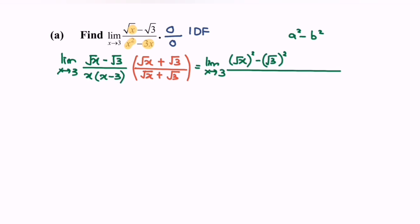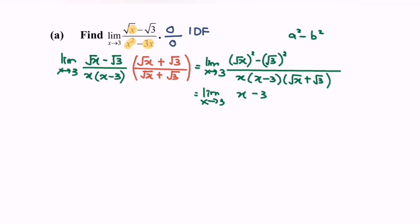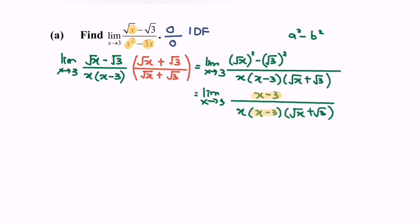Copy the denominator. Then simplify the situation. Limit when x approaching 3 — we notice there are common terms, so we can simplify. Then rewrite the situation.